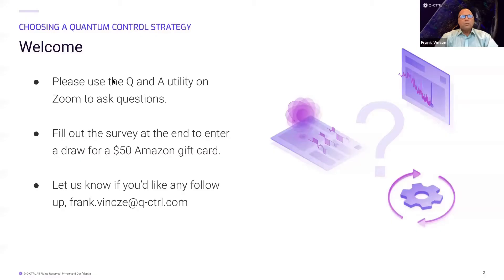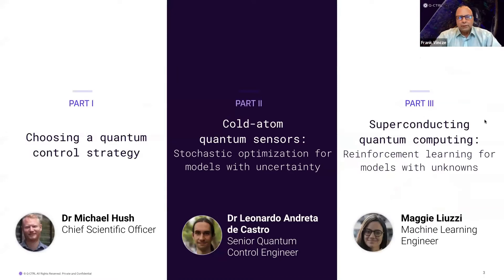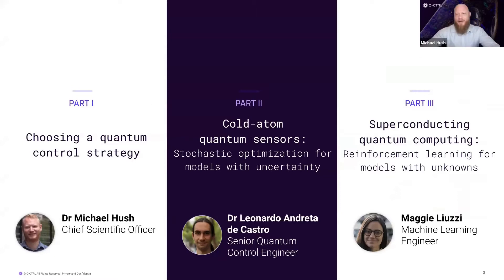I'd like to now introduce the panel. Michael Hush — Chief Scientific Officer here at Q-Control — completed his PhD in Quantum Physics at the Australian National University, where he won the University Medal for Theoretical Physics. Currently, Michael actively engages with diverse quantum technology challenges brought forth internally and by our customers. I'm looking forward to talking more about how to make it easier to pick the right control for your needs.